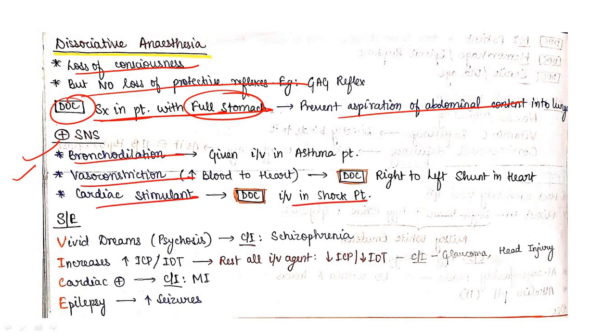Drug of choice as IV anesthetic in shock patients. Side effects: vivid dreams, increases ICP, cardiac stimulant so contraindicated in MI (very important), and can cause epilepsy increasing risk of seizures.